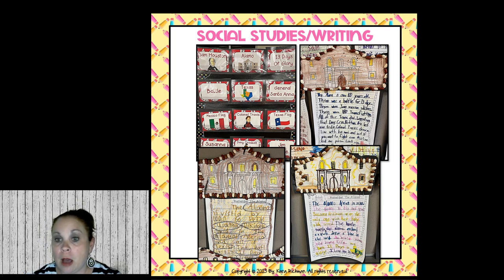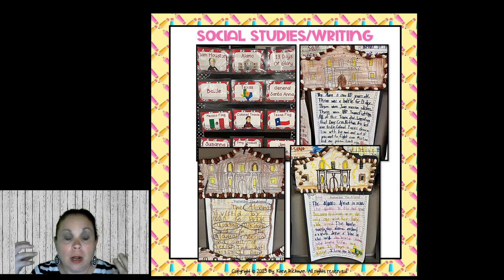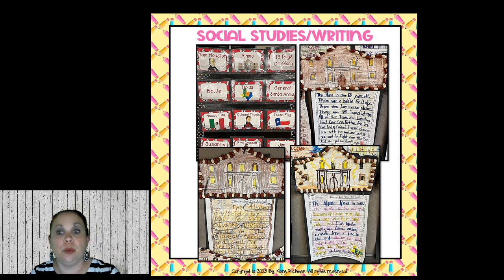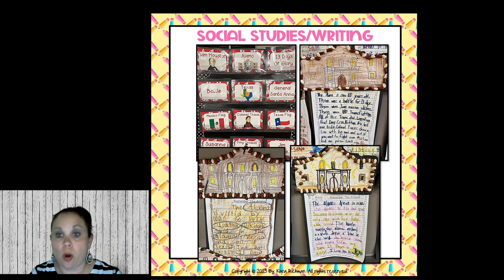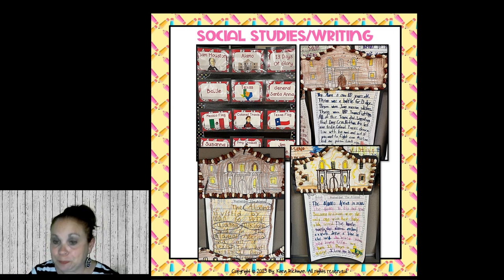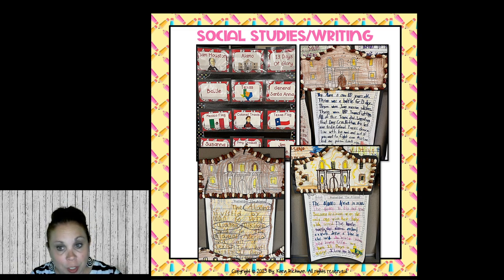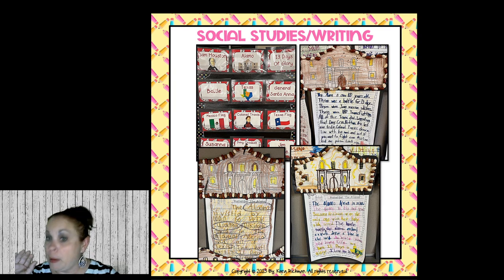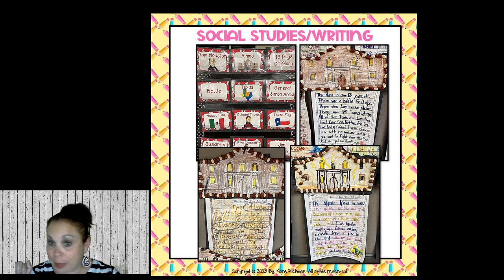All week long I do interactive writing on a big chart, writing different sentences about the Alamo using all the vocabulary words. I show them how to put the story in their own words and I always tell them to have five words or more in their sentence. At the end of the week, they write their very own story about the Alamo using the word bank to help them generate sentences. I tell them to use as many words as they can, and if they write a whole page they get a $50 bill — and about 98% of the class will write a whole page, even my lower students.